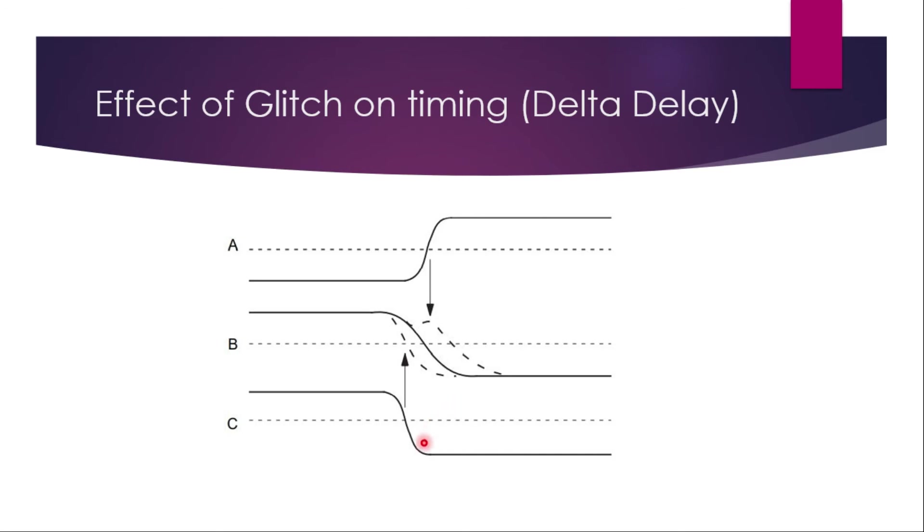At the same time, net C can also act as an aggressor to net B, which causes it to switch faster. It's going from 1 to 0 very fast and that 0 can go over here and may push this net B to switch faster than what exactly needed. This results into two types of problems because slower transition results into setup violations and faster violation results into hold violations.